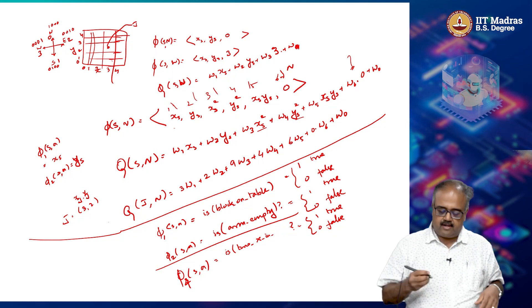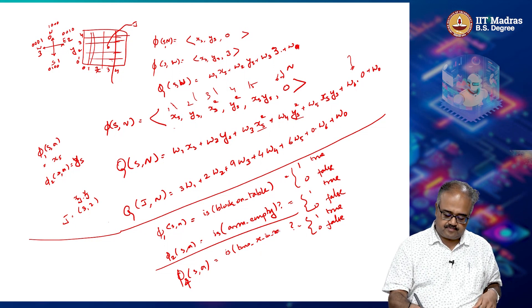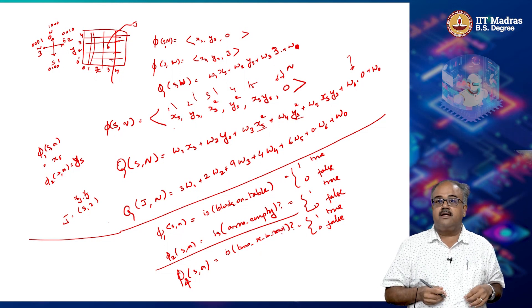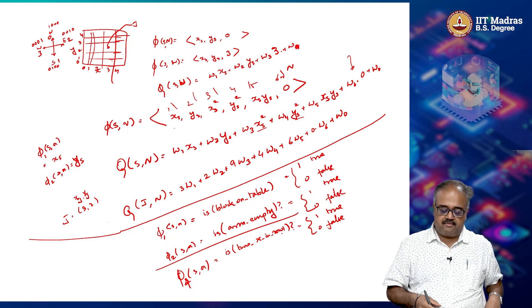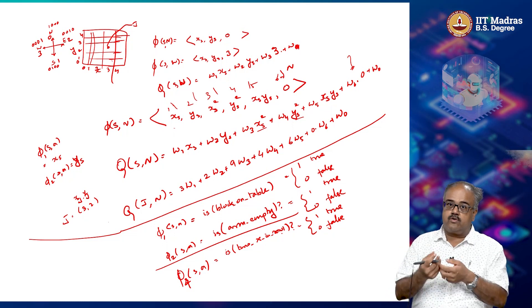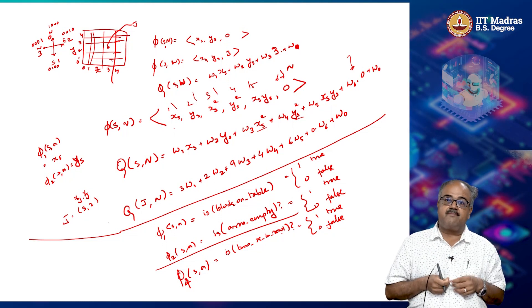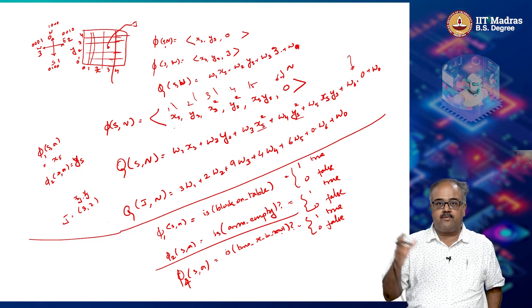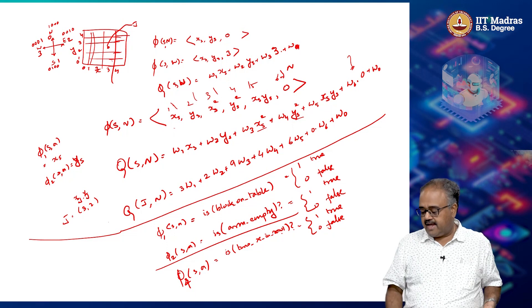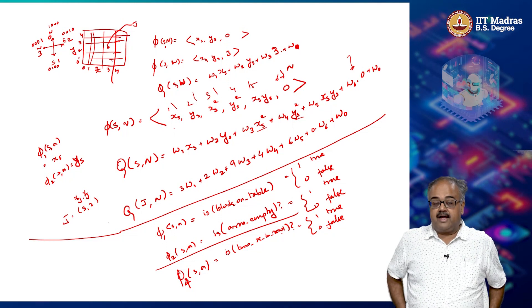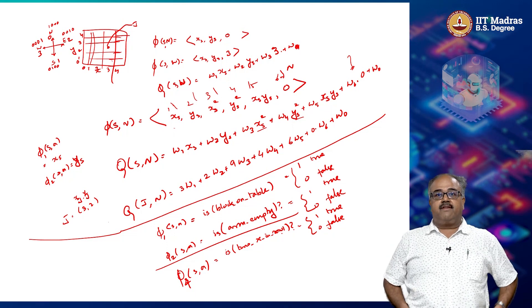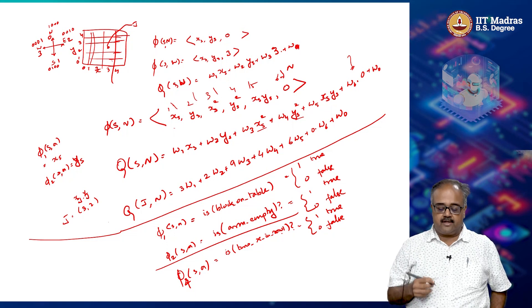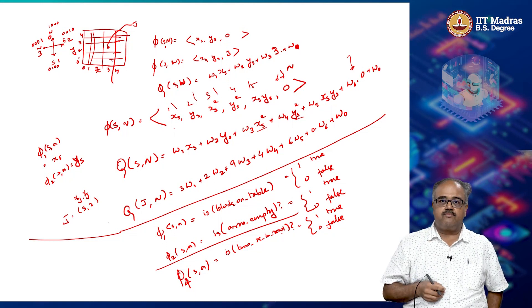And likewise, I could have phi 5 will be or there are 2x's in row 2, phi 6 can be or there are 2x's in row 3. And likewise, in column 1, column 2, column 3, diagonal 1, diagonal 2. So all of these, I can basically define features. And then I will set it to 1 if the feature evaluates to true, I will set it to 0 if that feature evaluates to false.